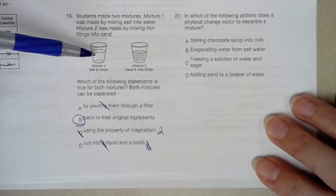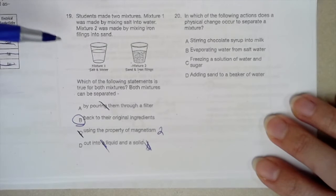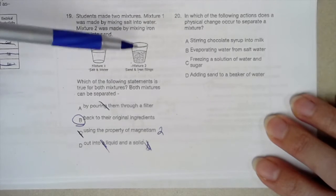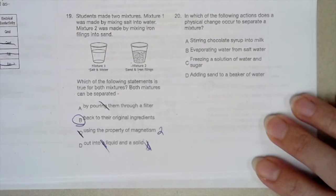We could evaporate the water and have back to just water vapor, which is water and salt. We could take a magnet and separate all the iron filings out of the sand and have them back to their original state.